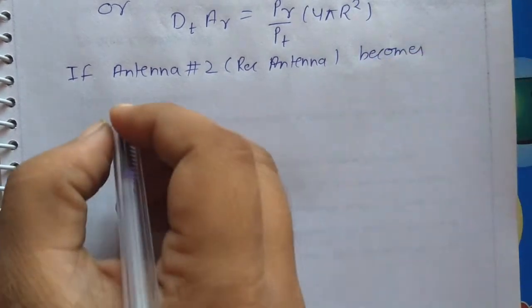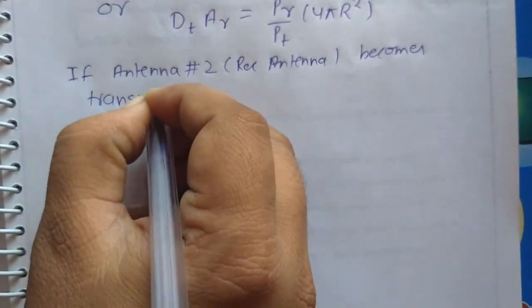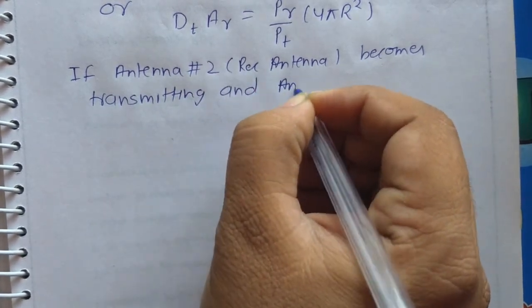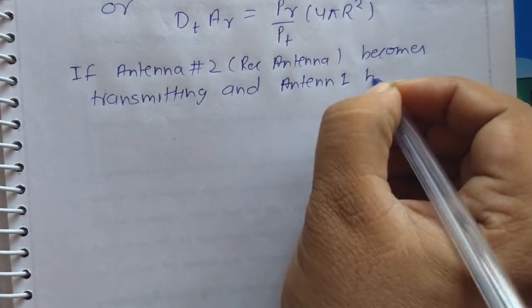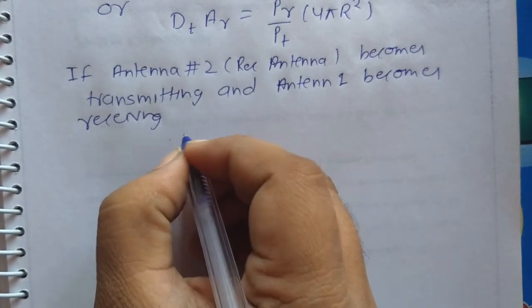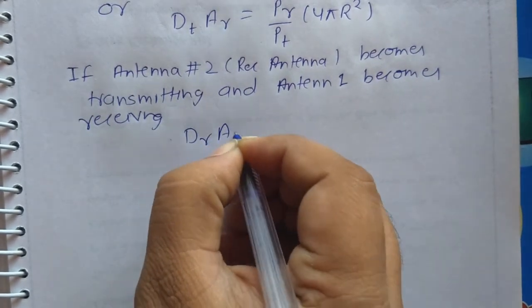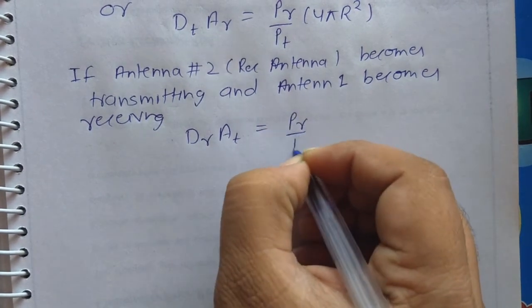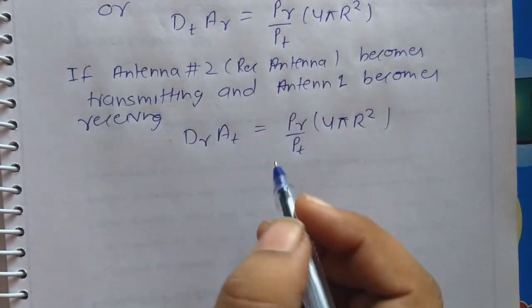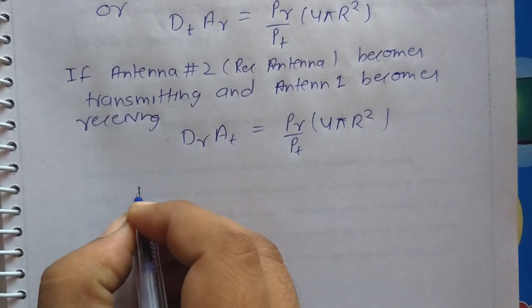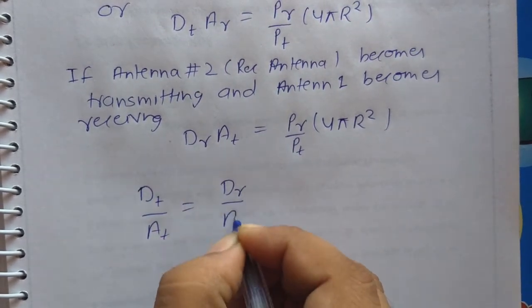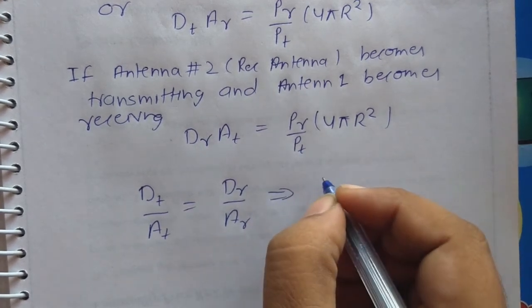If antenna 2 or the receiving antenna becomes the transmitting antenna and antenna 1 becomes the receiving antenna, then DR×AT equal to PR divided by PT times 4πR². So from these two equations we can write: DT divided by AT equal to DR divided by AR.